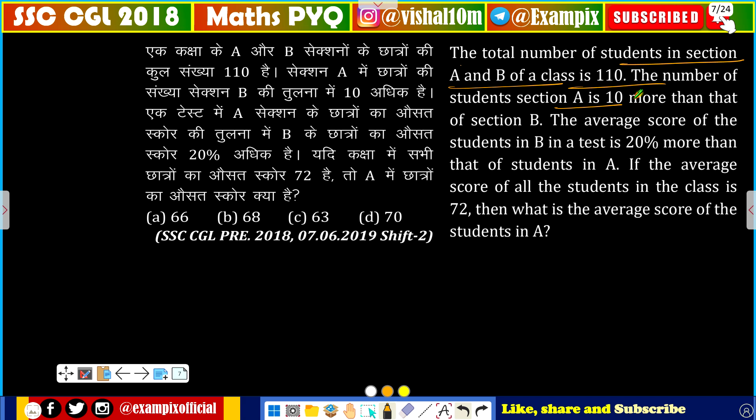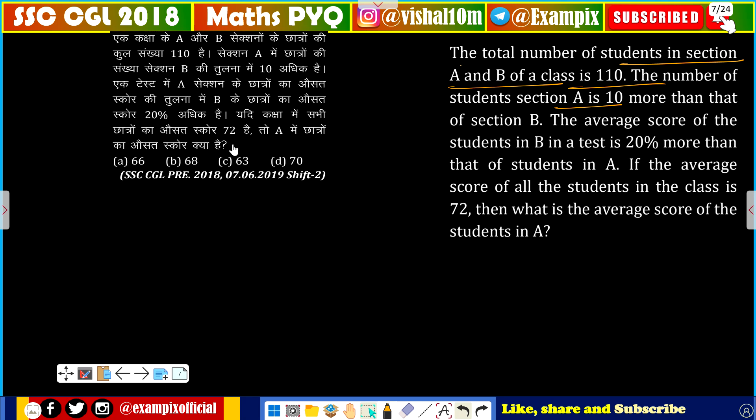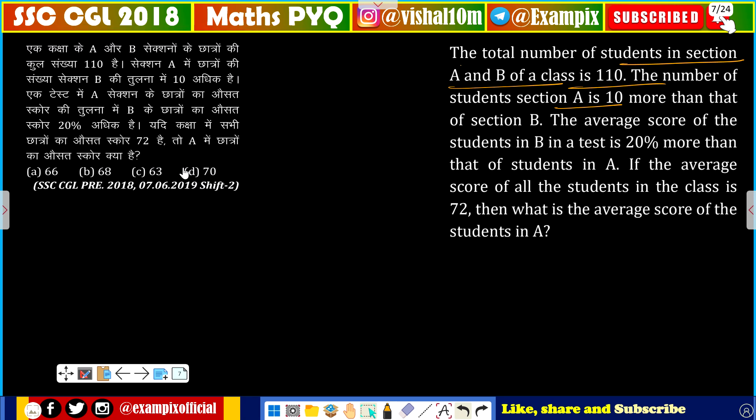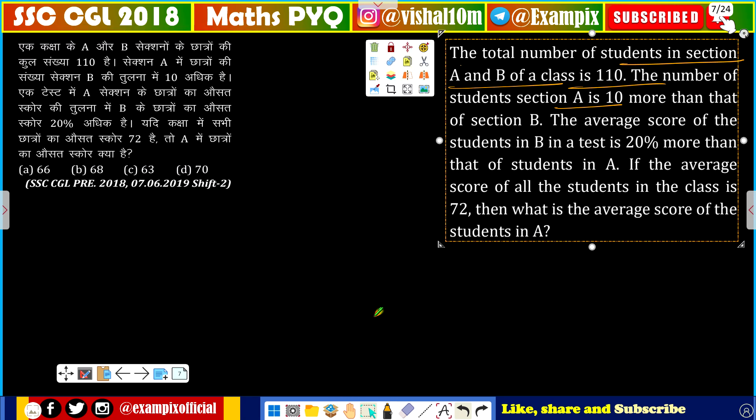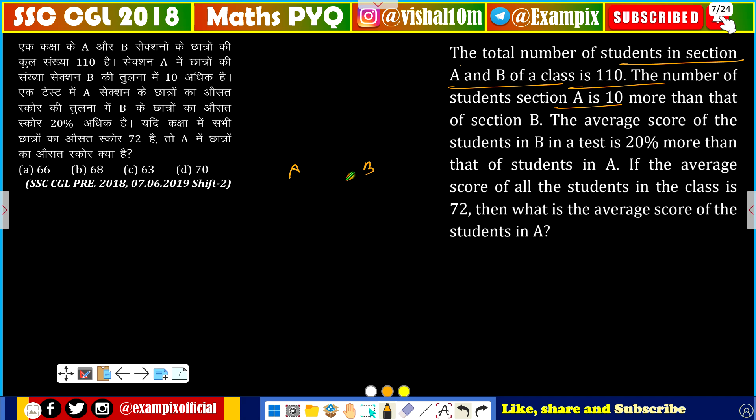So we can do it with alligation. How do we do it with alligation? A is B, total is 72. 110 is more than A, we can do it with B.